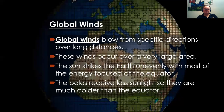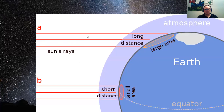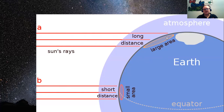Global winds blow from specific directions over long distances and occur over a very large area. The sun strikes the earth unevenly, with most of the energy focused at the equator, while the poles receive less sunlight and are much colder. This diagram shows that the sun's rays cover a longer distance over a larger area at the poles (indirect hit) versus a shorter, more direct hit at the equator, due to the shape and tilt of the Earth.